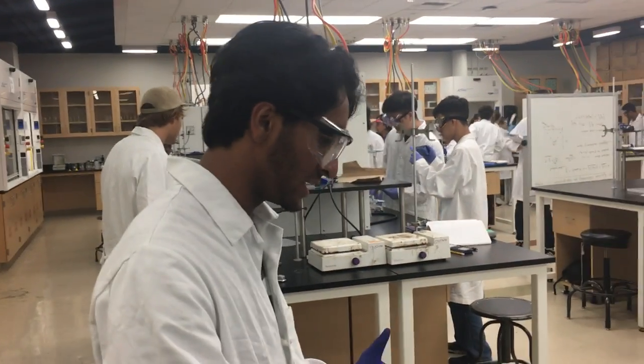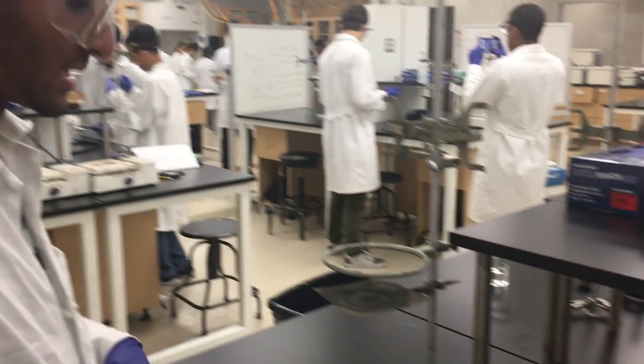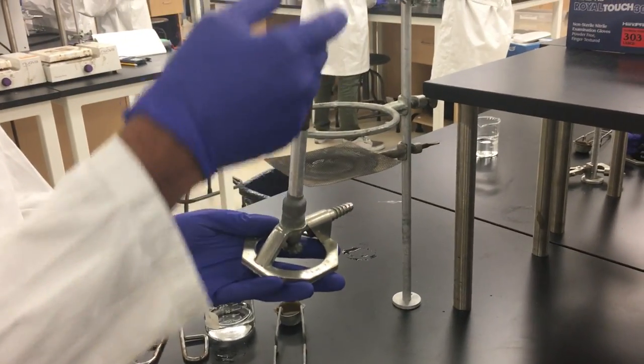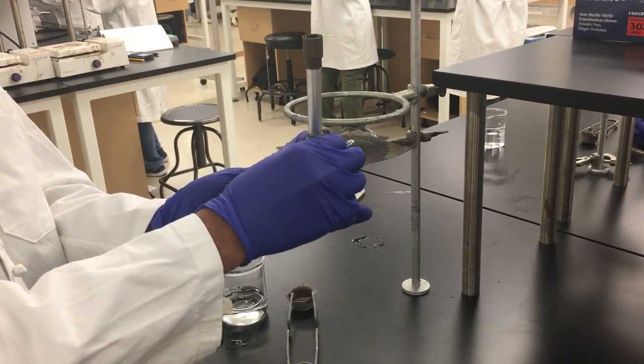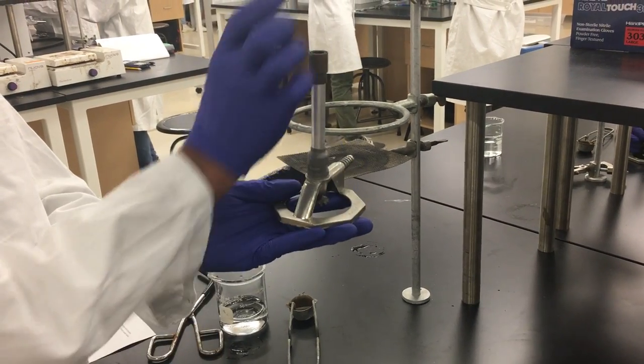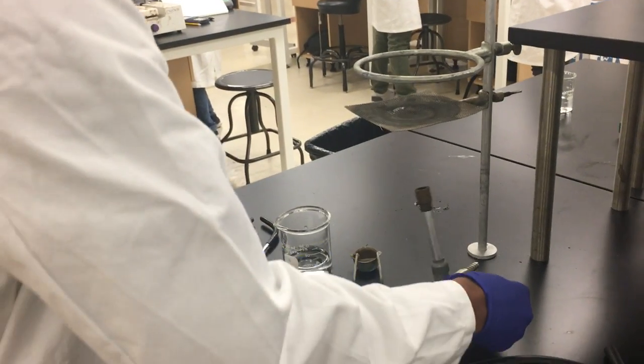I'm going to explain each part of the apparatus and then show the assembly. This is the hose, it's going to be connected to the gas valve right here. We have the Bunsen burner itself, the flame is going to be coming out of this side. You can use this little swivel right here to adjust the height of the flame.